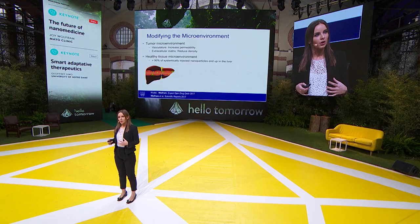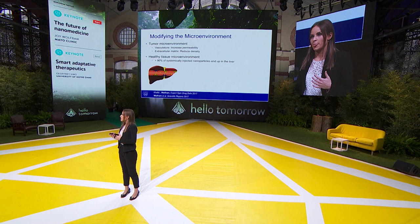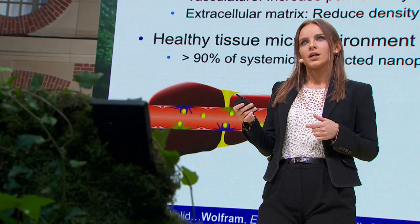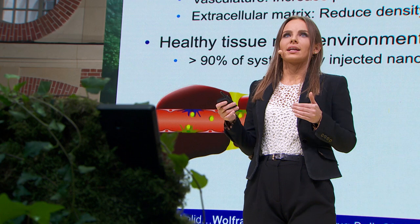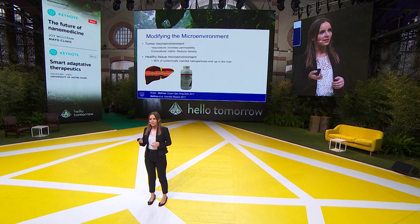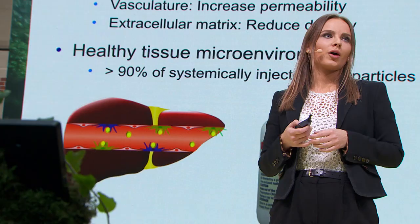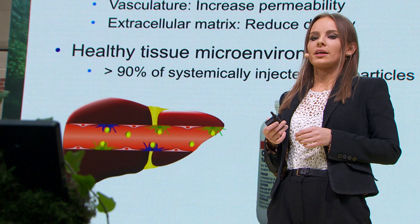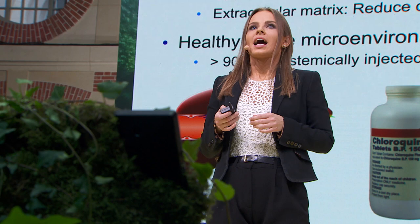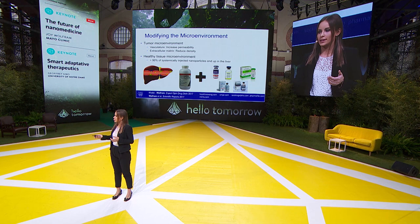The liver is the body's filtering system, with immune cells that engulf anything nano-sized from the bloodstream. If we're treating a disease not based in the liver, this becomes problematic. We explored temporarily deactivating these liver immune cells to stop them from taking up nanoparticles. Interestingly, we found that chloroquine, an anti-malarial drug approved in the 1940s, could block nanoparticle uptake in the liver. This paper was just published — the strategy is simple and broadly applicable to several already-approved nanodrugs.